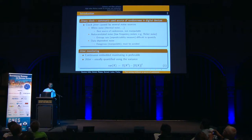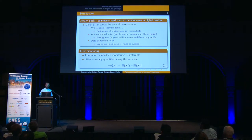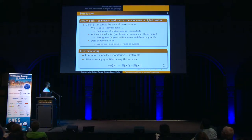It seems easy and clear on paper, but all these noises are actually affecting the jittery clock at the same time. So in order to produce quality random numbers, we need to monitor jitter continuously to verify its properties. And usually we use variance for that.